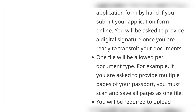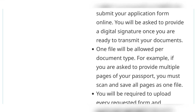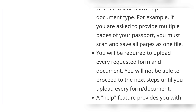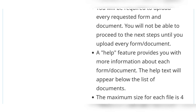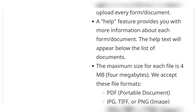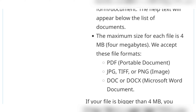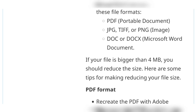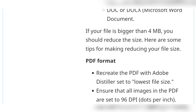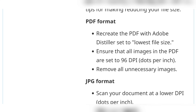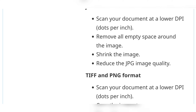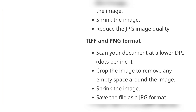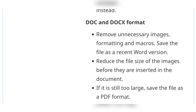It is also telling you the format of the documents that you should upload. You don't even have to sign them — you just create one PDF file. If you have multiple files, you merge them into one PDF, or you can use a JPG or a DOC/DOCX file. If your file is bigger than four megabytes, you have to use an app to reduce the size. It then lists all the files, the format they expect, and the fact that you need to shrink them if they're too large.